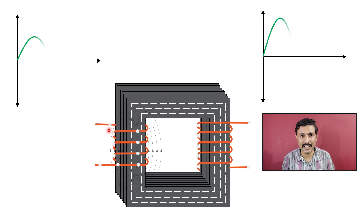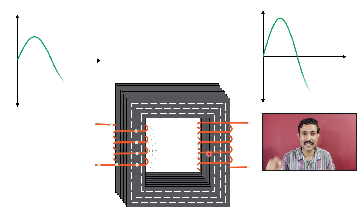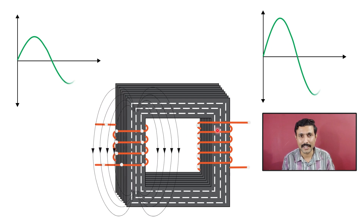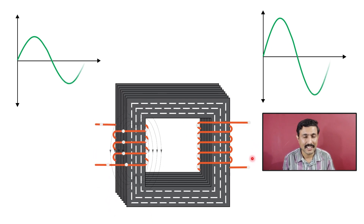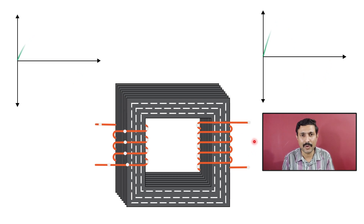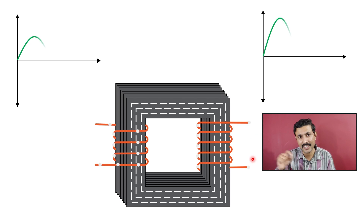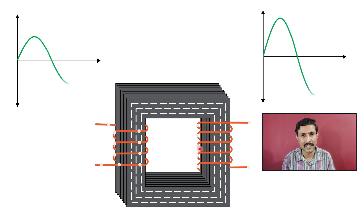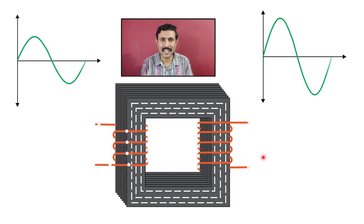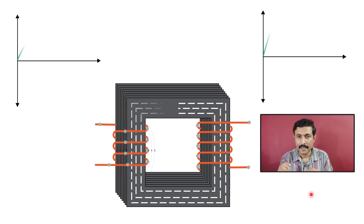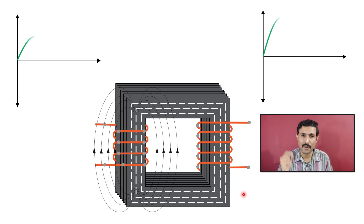As you can see, current is flowing through the primary winding but not through the secondary winding. This is because the secondary terminal is kept open — the circuit is not closed. When we close the circuit by connecting a load, current will start flowing through the secondary winding. This is how the transformer works.